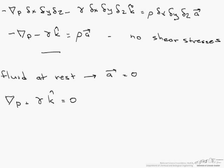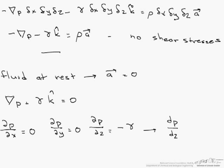So if we put this in our component form, dp/dx has to equal 0 because there is no i component, dp/dy has to equal 0 because there is no j component, and dp/dz equals negative the specific weight. So we can rewrite this whole thing as dp/dz equals minus our specific weight. In other words, this is now an ordinary differential equation.